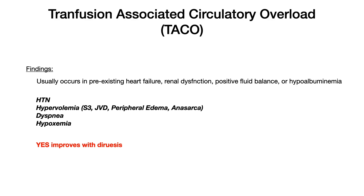Symptoms-wise, what should you look for in TACO? Hypertension, signs and symptoms of hypervolemia — your S3 heart sound, jugular venous distension, anasarca, peripheral edema, shortness of breath, and hypoxemia. Again, patients with underlying heart conditions, kidney conditions, or conditions that would make them more likely to experience the adverse effects of potential hypervolemia. In TACO, this is inherently cardiogenic.